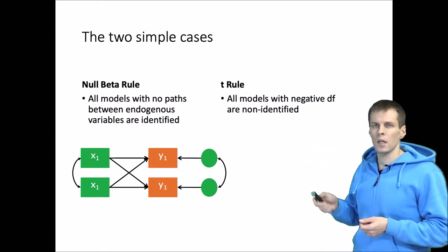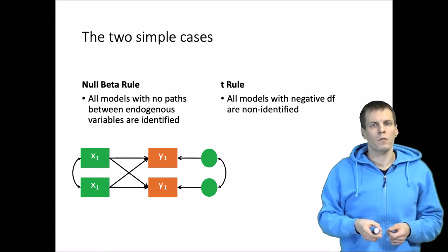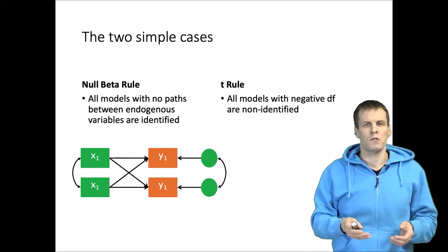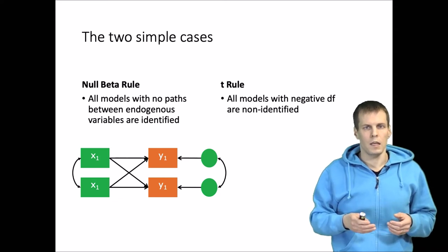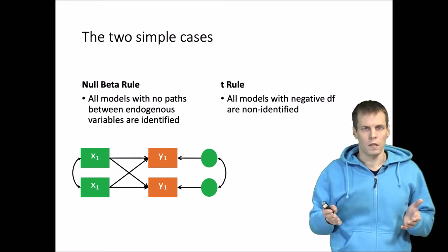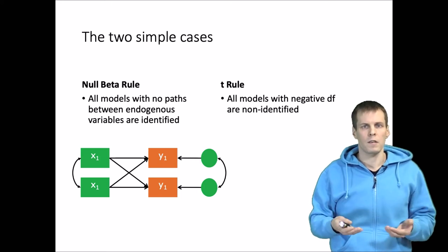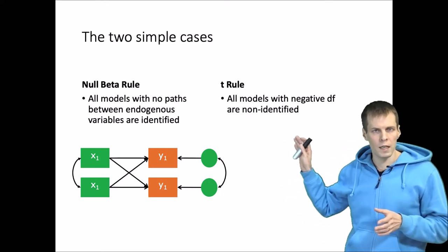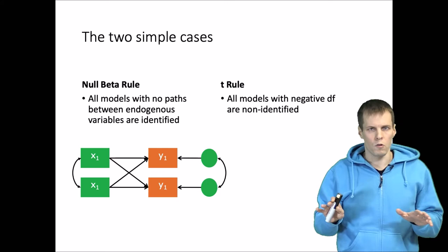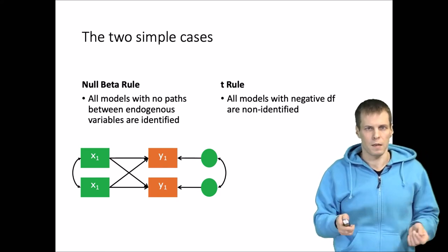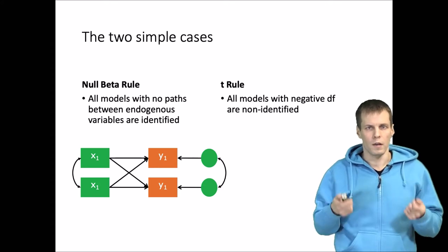Then we have the T rule. The T rule is a counting rule where you count the number of unique variances and covariances in the data and subtract the number of parameters you want to estimate. If the result is negative, then your model is not identified. This is the same as checking the degrees of freedom after estimation. If degrees of freedom is negative, you know the model is not identified and needs to be fixed or you need to add more information to allow estimates.